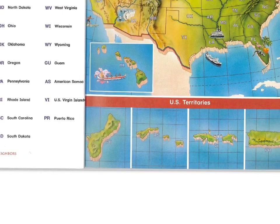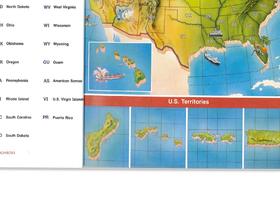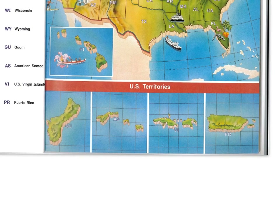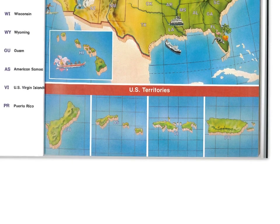These territories could become states: Guam, American Samoa, US Virgin Islands, and Puerto Rico. Those are four US territories that are not states, but maybe someday in your lifetime they could become states.